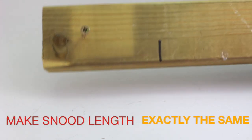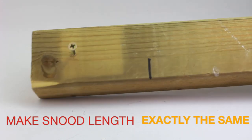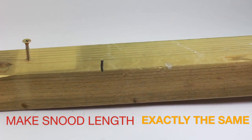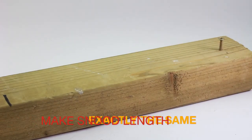This is the best way I've found of making the snood length exactly the same for rig making. I've taken this block of wood and put two screws in it, one on either end. You can use nails as well for this.